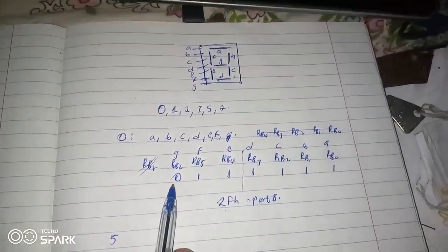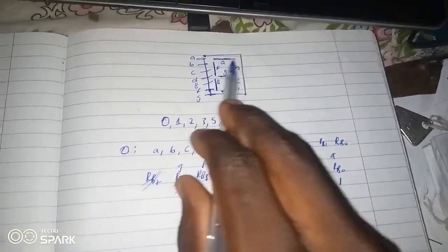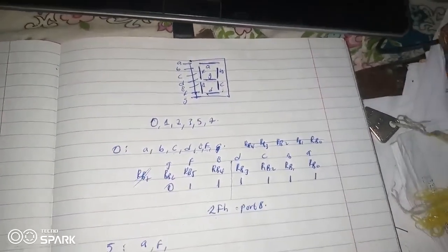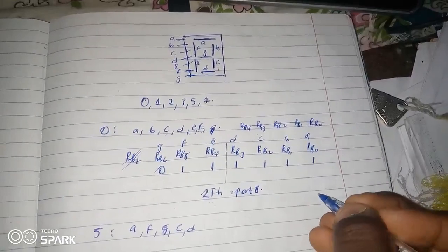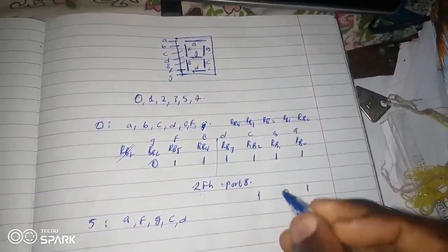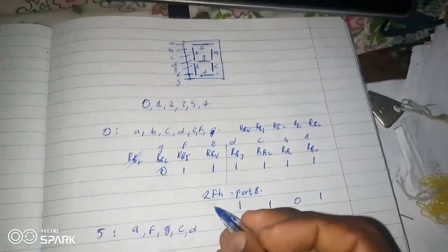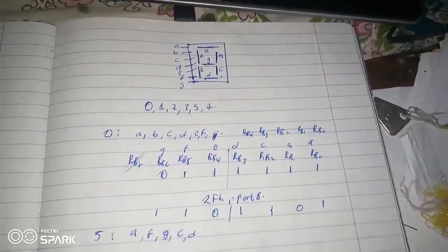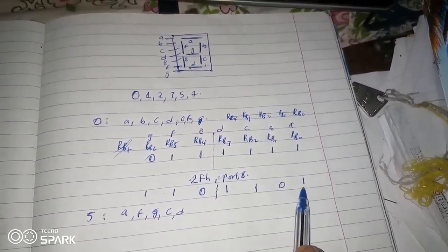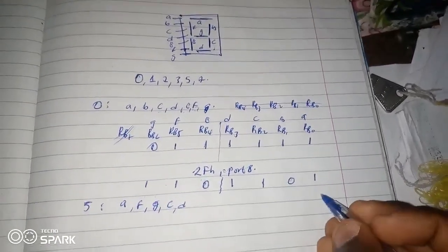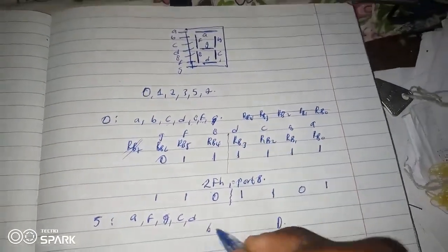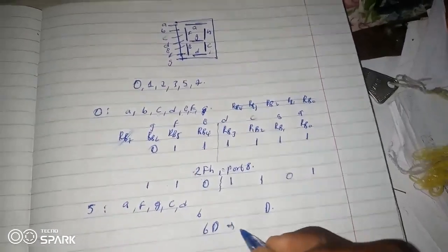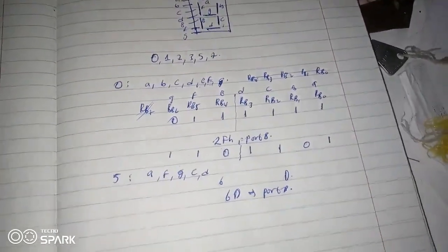To display a 5, we need to figure out which segments shine. For a 5: A, F, G, C, and D need to shine; E does not. So we put that in hexadecimal too. Doing the calculations quickly — that gives us 6D. So we send the value 0x6D to Port B. That's all for the calculations.